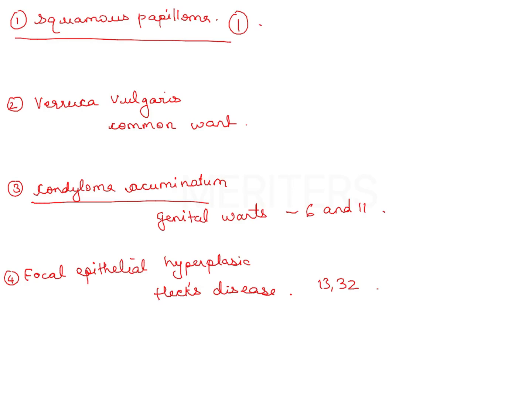Sexually transmitted high-risk HPVs include subtypes 16, 18, 31, and 33, and are associated with cancer. Subtype 16 is most commonly implicated in the cancerous form of papilloma virus. These are the different lesions caused by human papilloma virus which have oral manifestations.